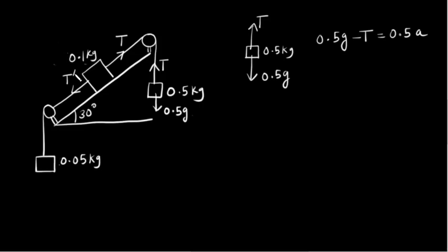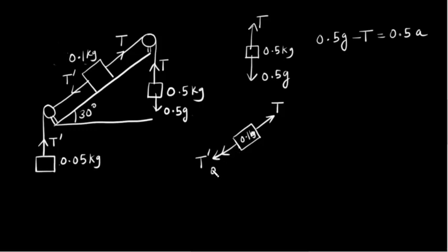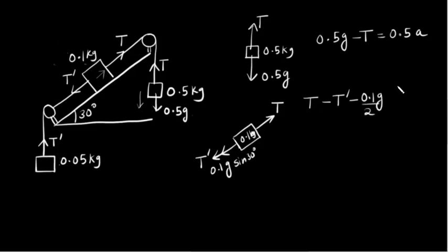Here there will be a tension T again because it is the same string, so there will be tension T-dash over here, and in this string also the tension will be T-dash. Now for the 0.1 kg mass, the free body diagram will look like this: there will be tension T in this direction, tension T-dash in this direction, and there will be mg sine theta, that is 0.1g sine 30 degrees, in the downward direction.